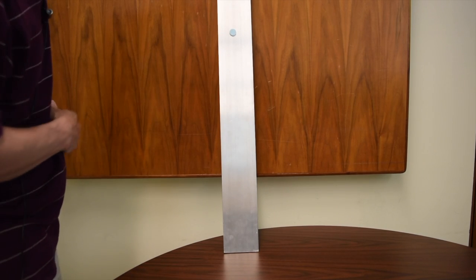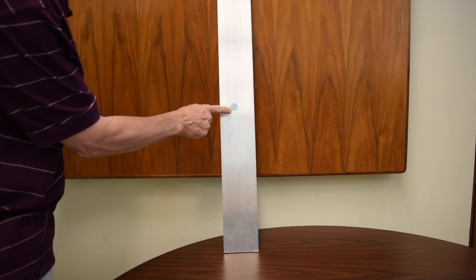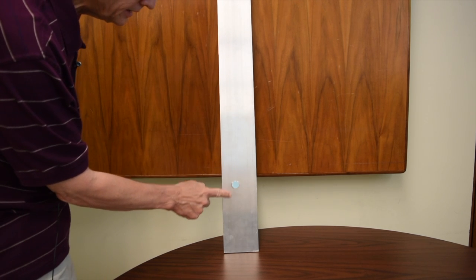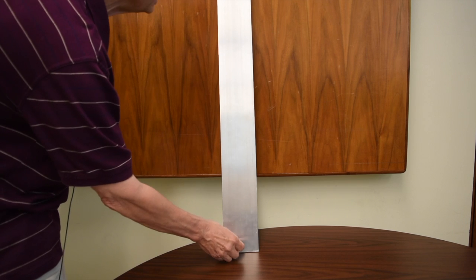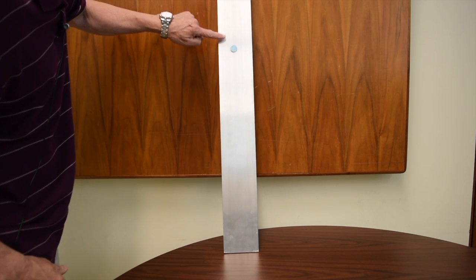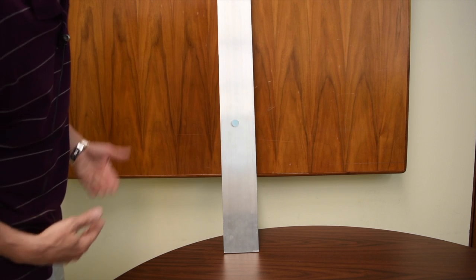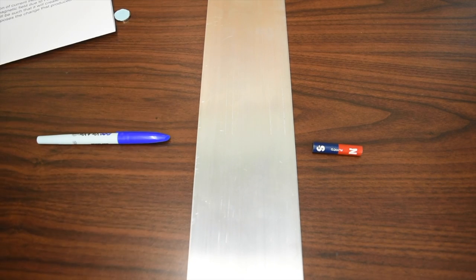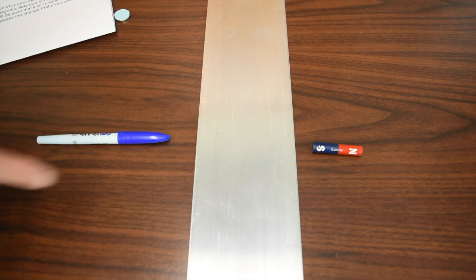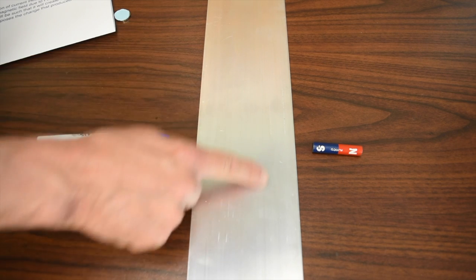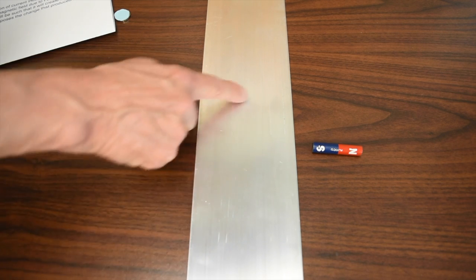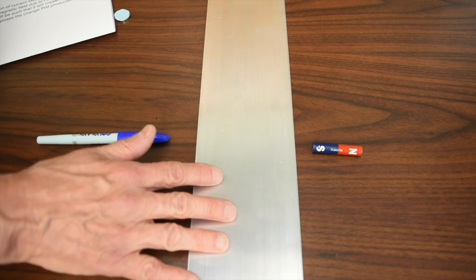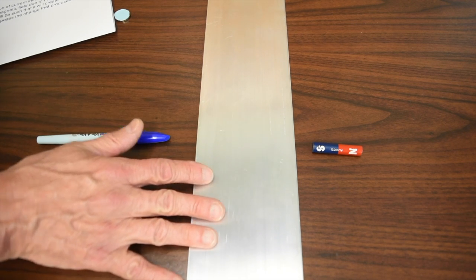As the magnet is falling, the region it enters now has a magnetic field, and the region it's leaving, the magnetic field is disappearing. From Faraday's law, we know a changing magnetic field will induce an electric field. And if that electric field is occurring in a metal, it will induce currents. If it's a plate like this, we refer to those as eddy currents.